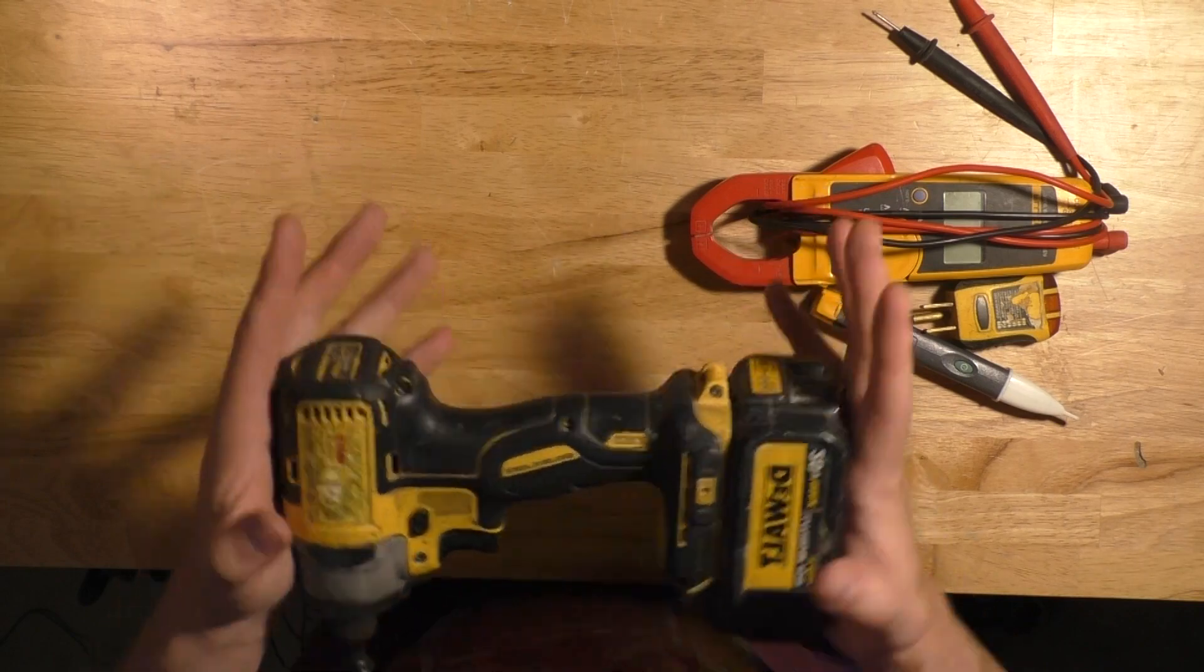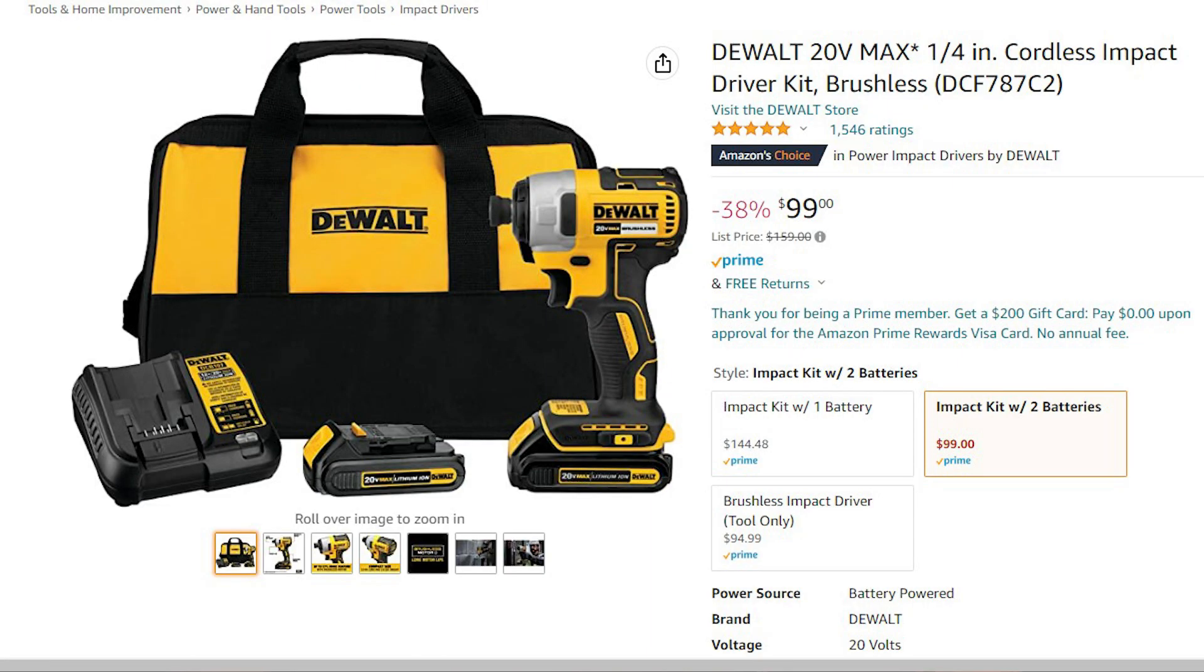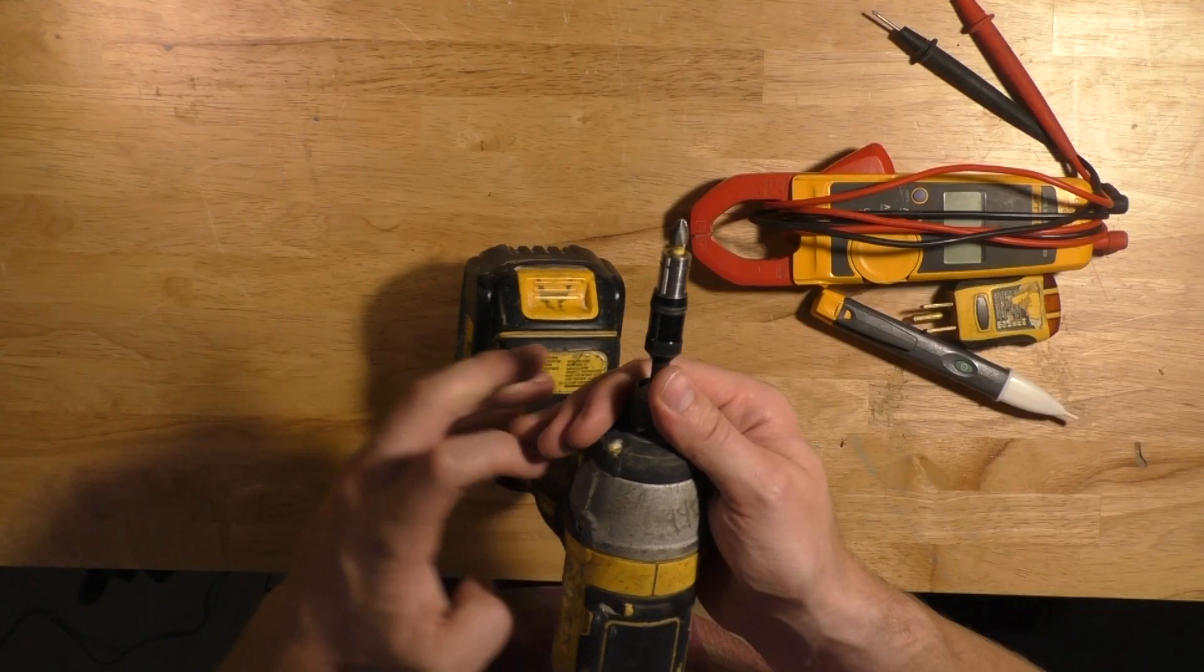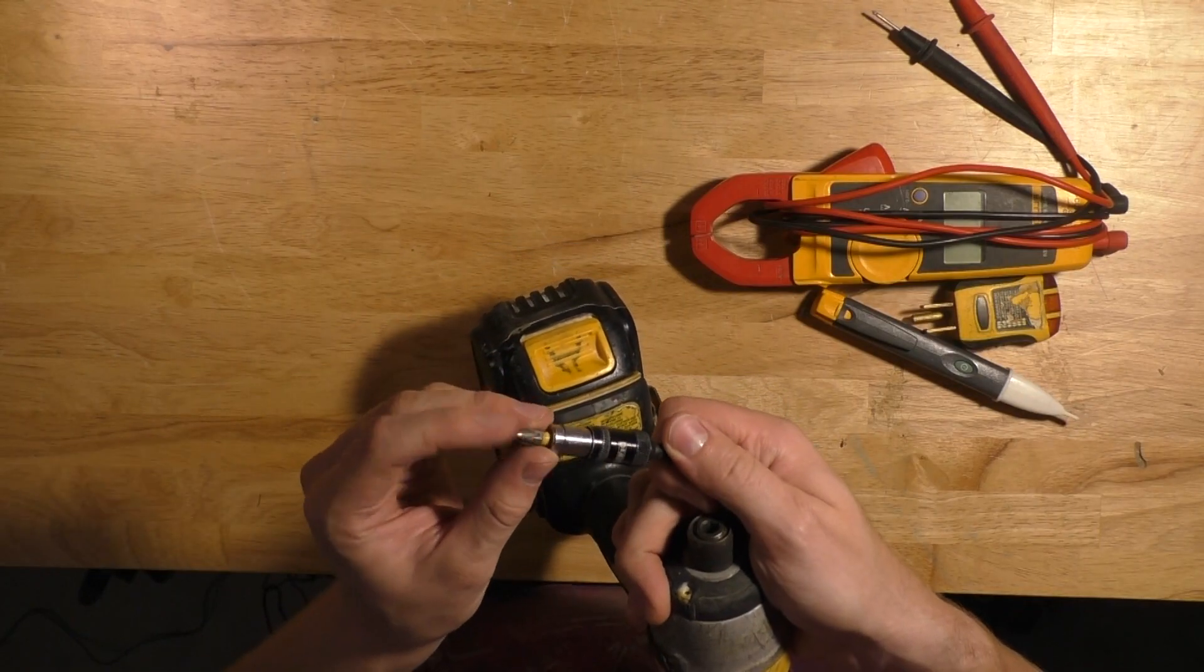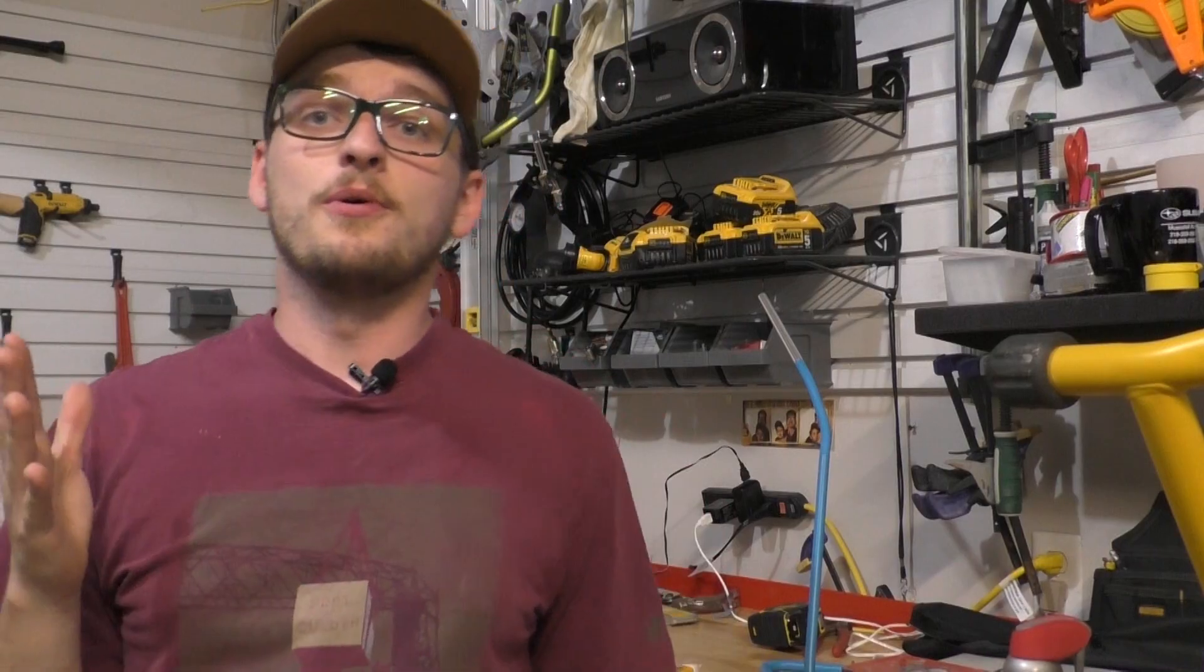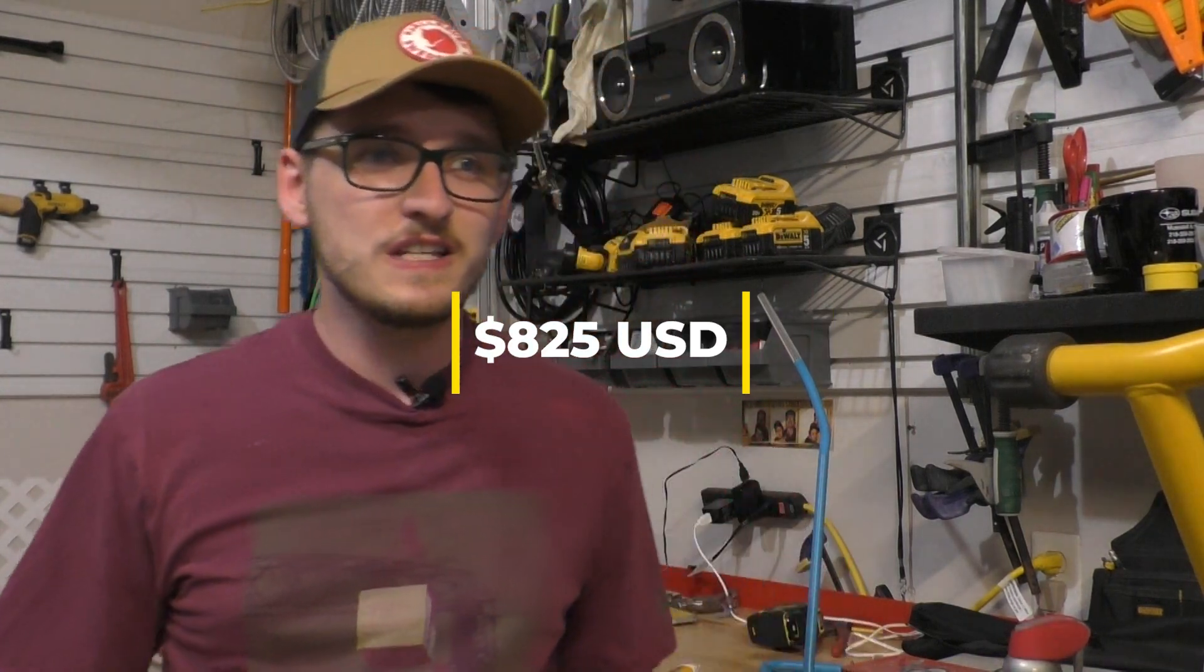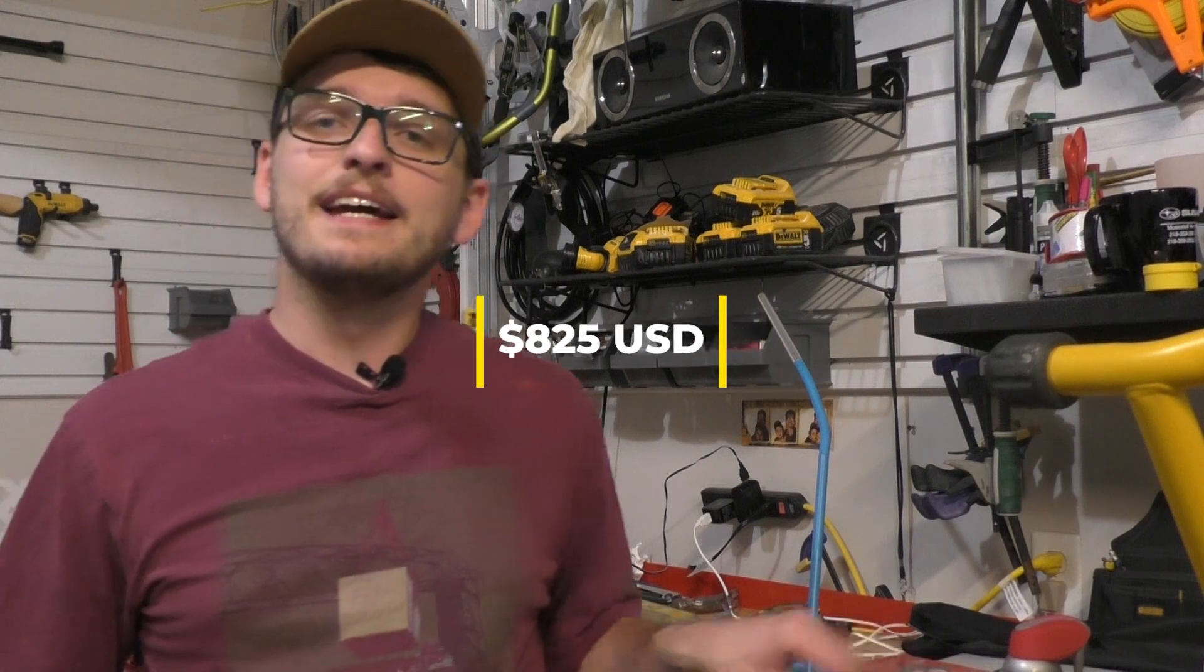Bottom line is no matter how you get it, you will need an impact driver every day as an electrician. It is by far the most common power tool that we use. Getting a DeWalt kit with an impact and a drill, a charger and a couple batteries will cost around $150.